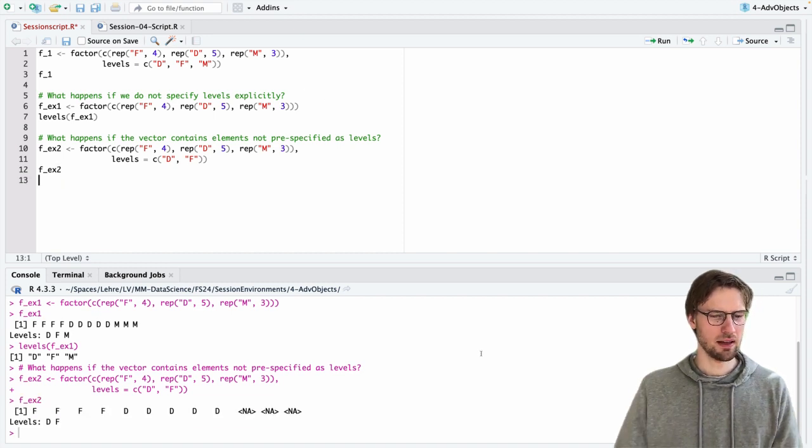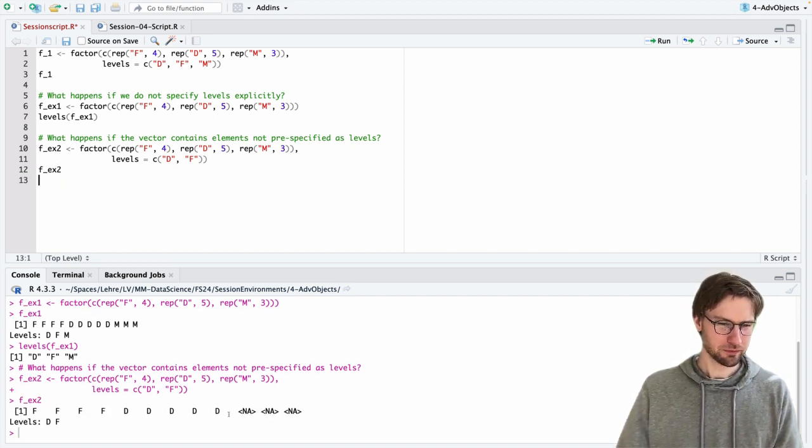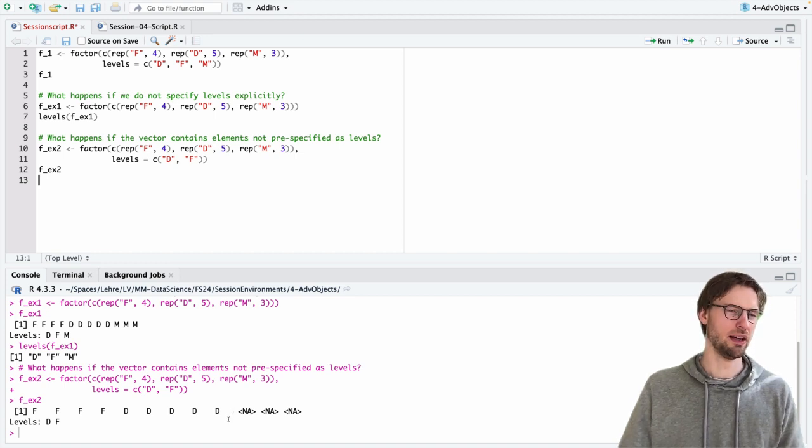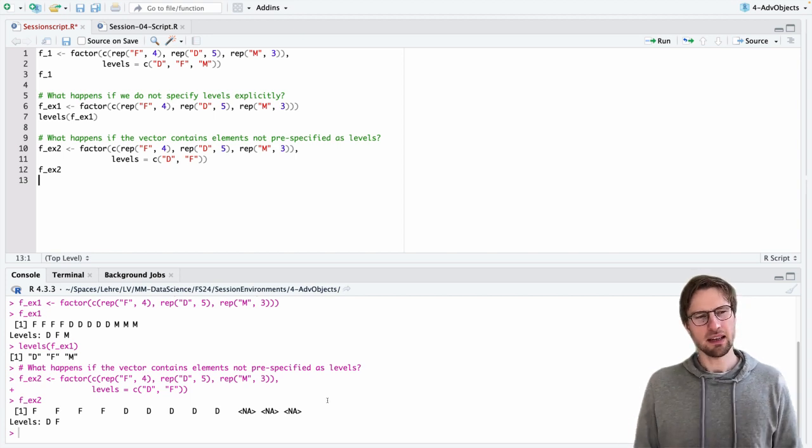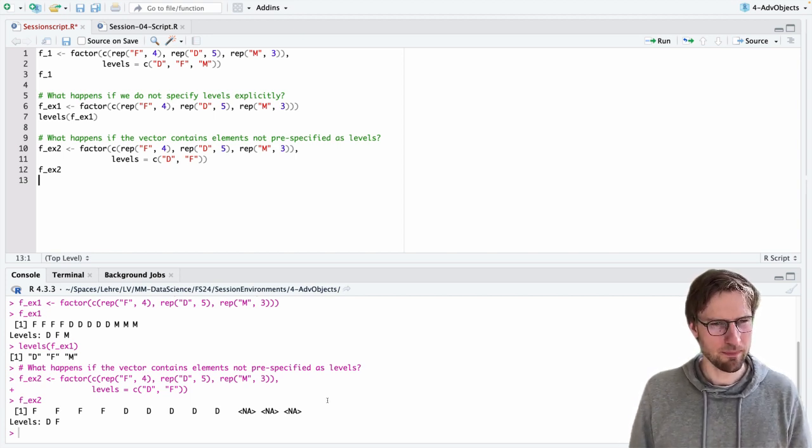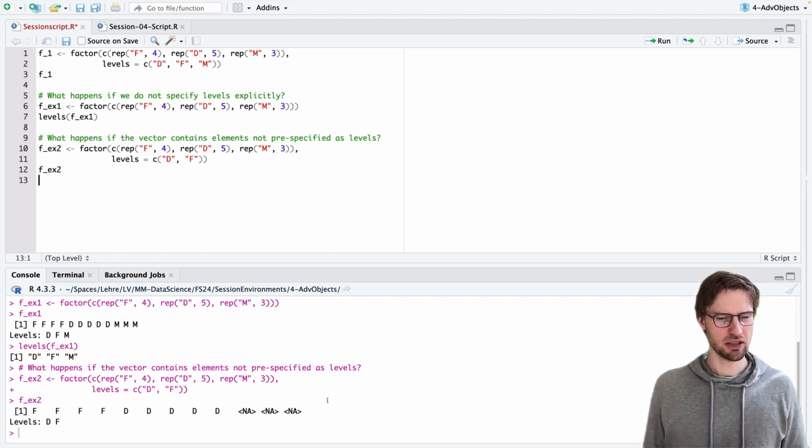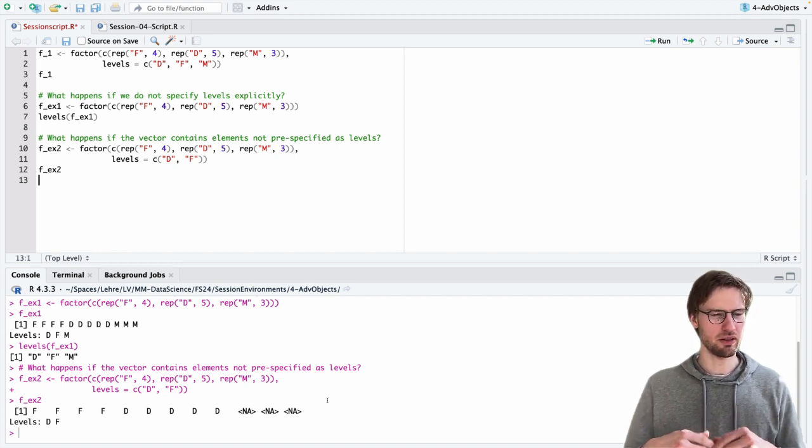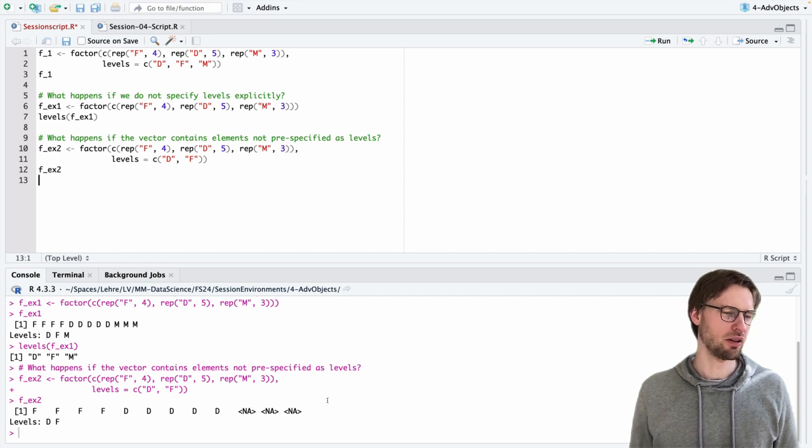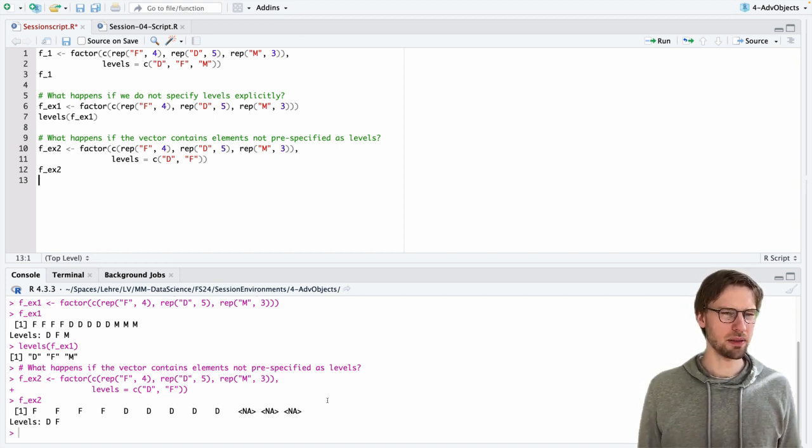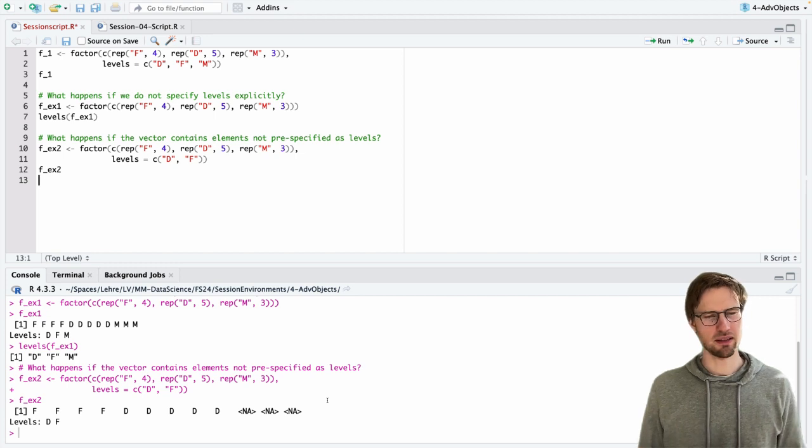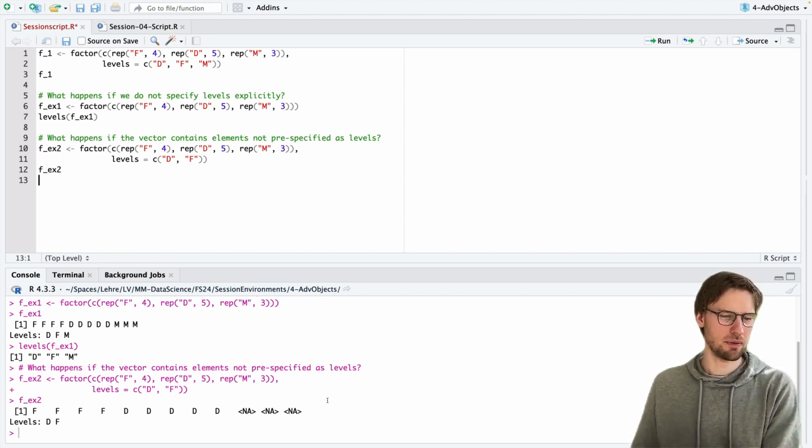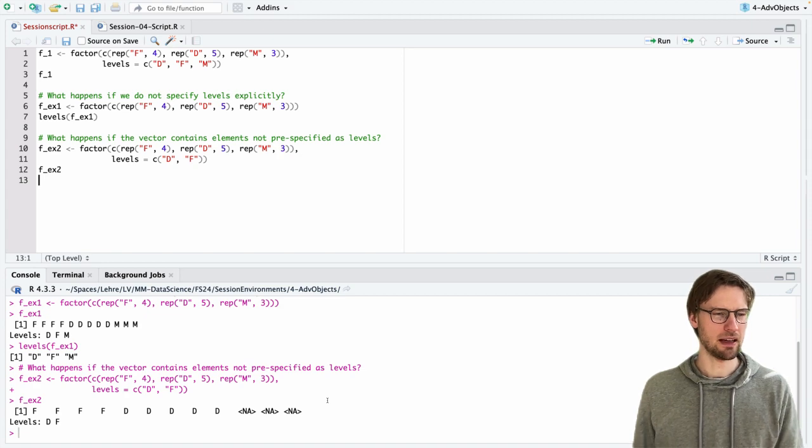In this case, the elements of the vector that were excluded by the levels here, they are set to an NA. This can actually be quite useful when, for example, you have data from a questionnaire, and you allow people to add some values in a free form, but you want to make sure that only certain values are allowed. Then you can say, set the levels explicitly, and everything that has been entered in a different fashion is automatically encoded as an NA.